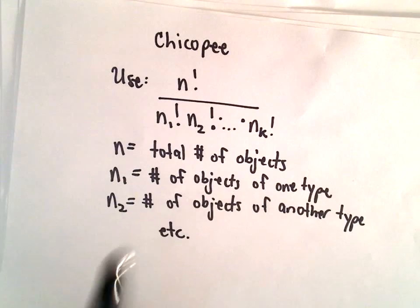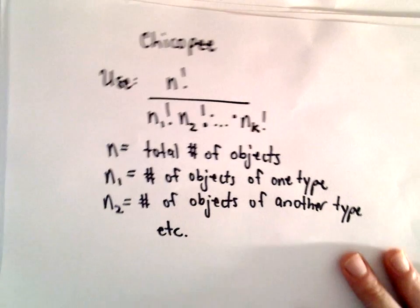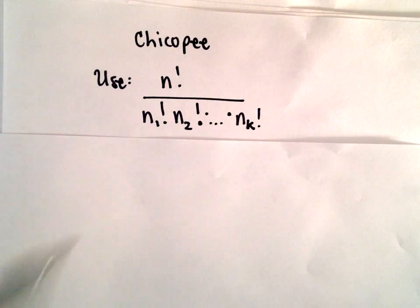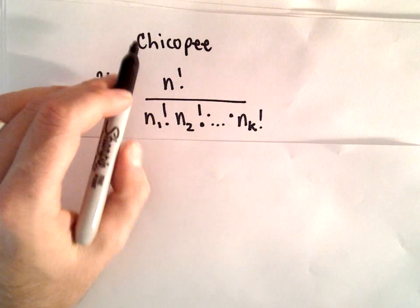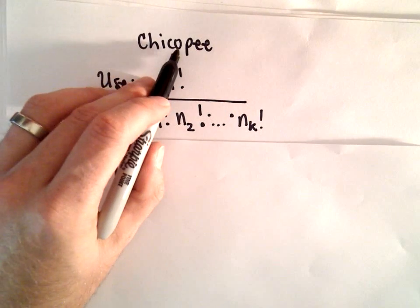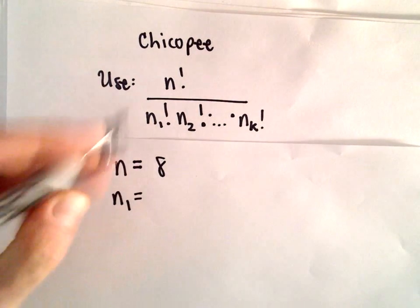So let's start listing our values here. So for n, that's the total number of objects. Well, we're just counting the number of letters. So we have 1, 2, 3, 4, 5, 6, 7, 8. We've got 8 letters.